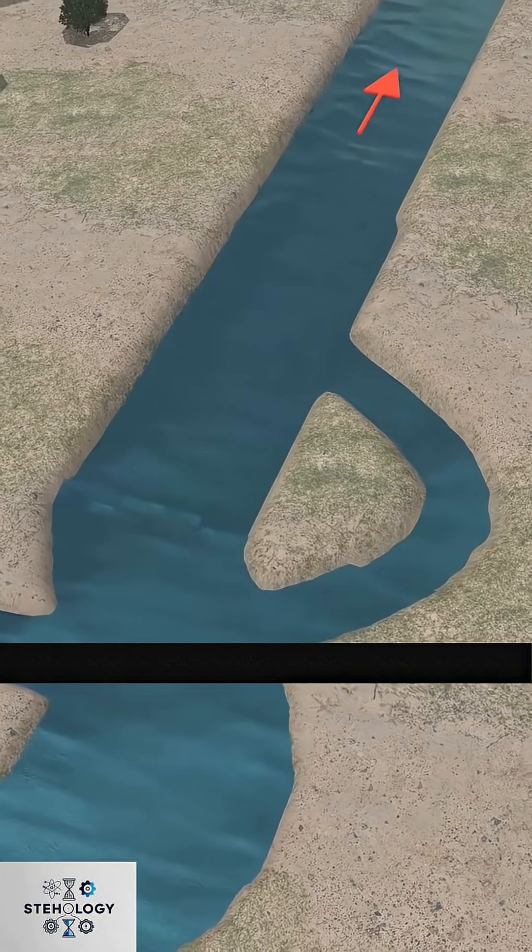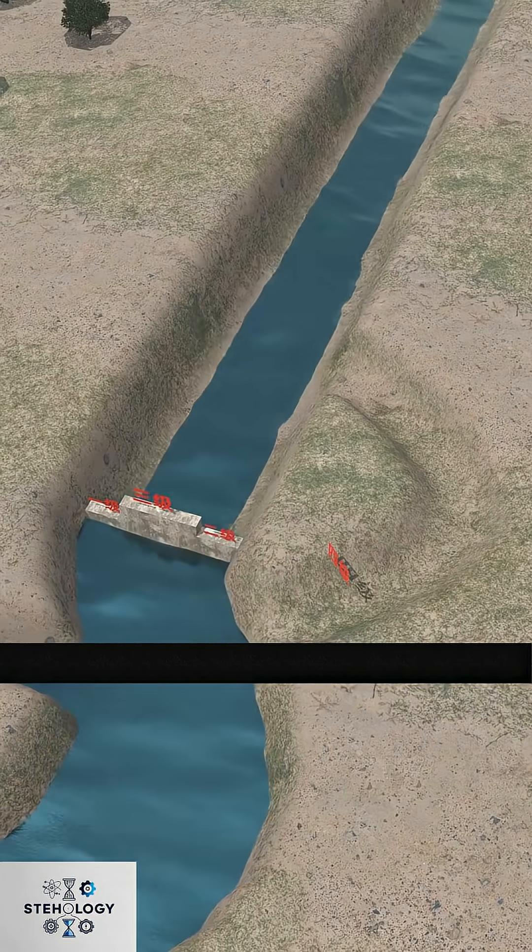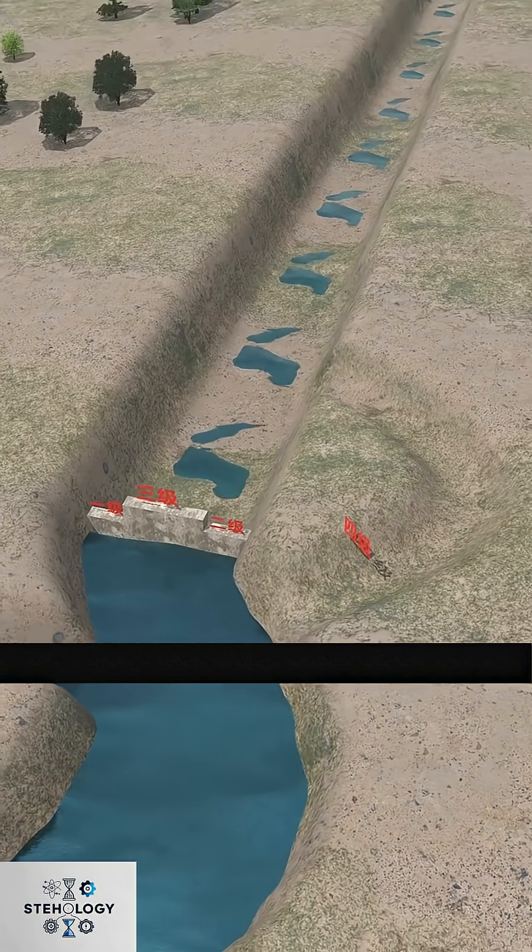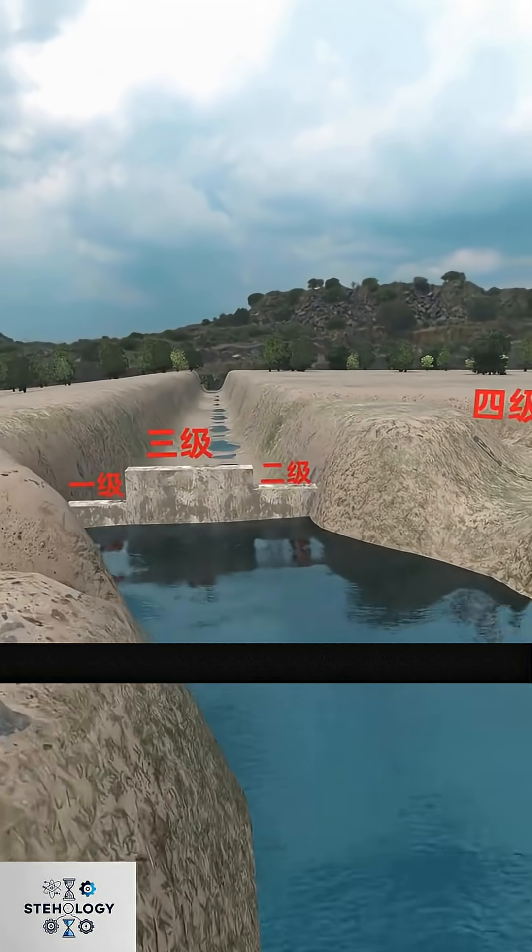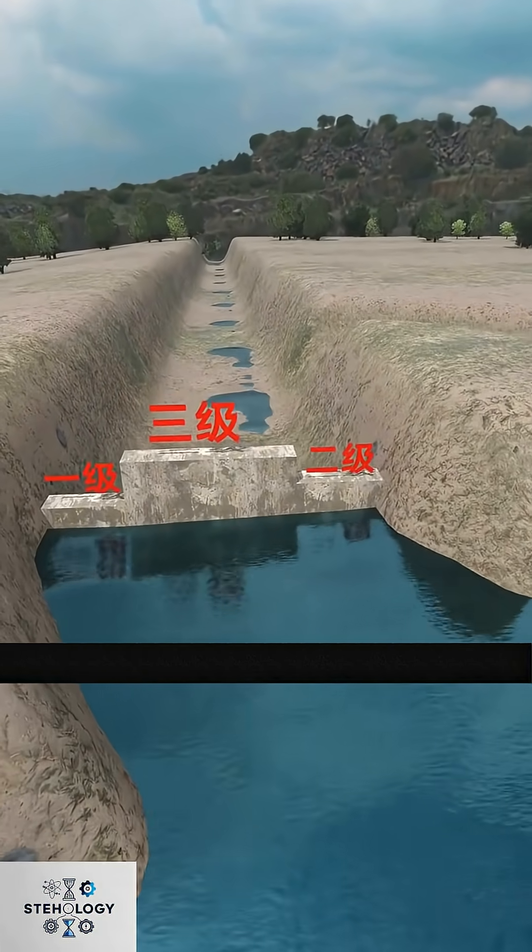This tiered design acts like an automatic sluice system, self-adjusting to water levels, ensuring stable canal navigation. But you found a 10-meter drop between the river and canal.